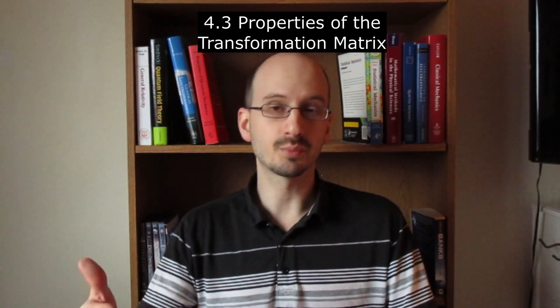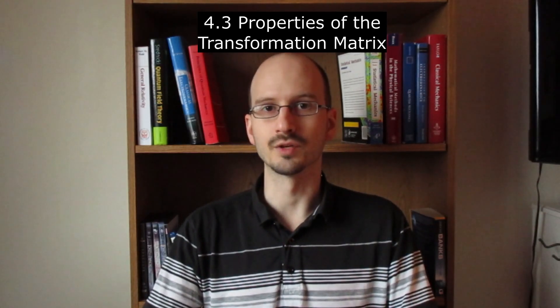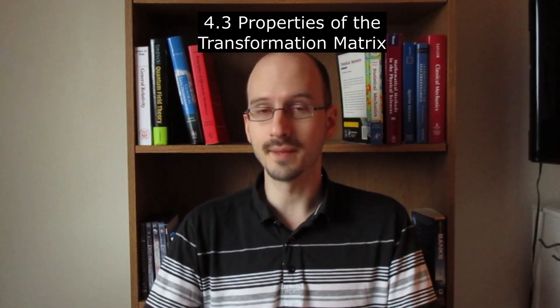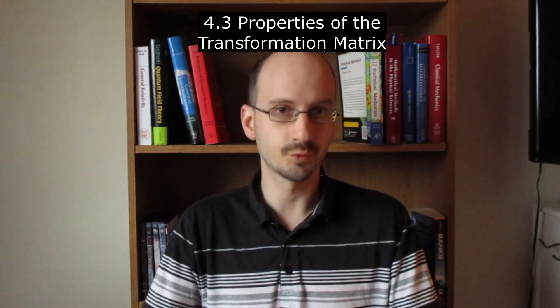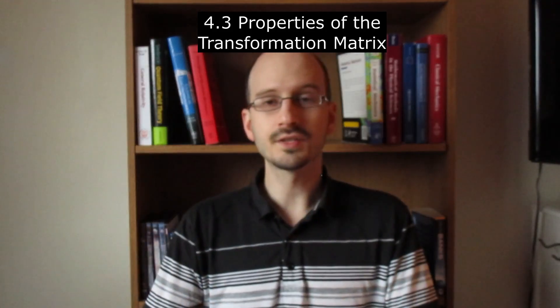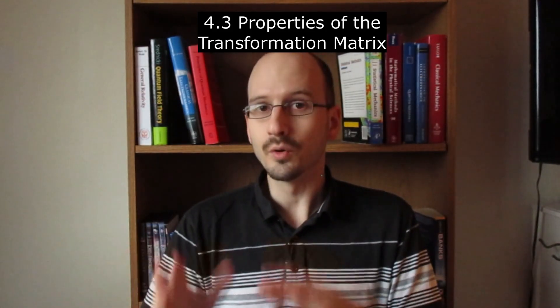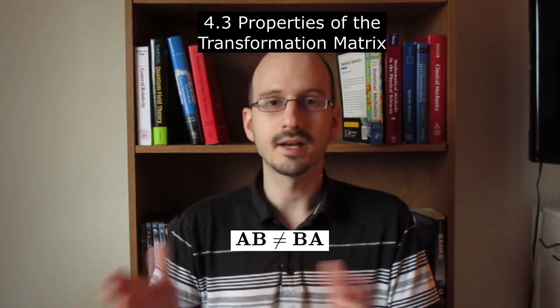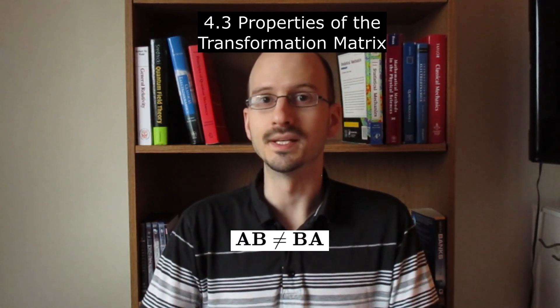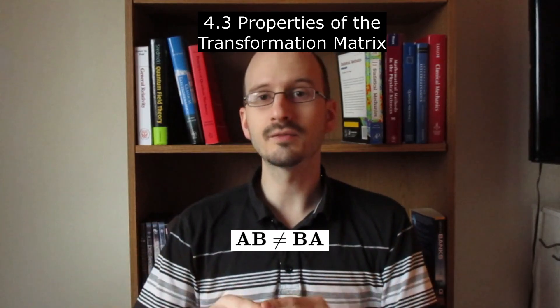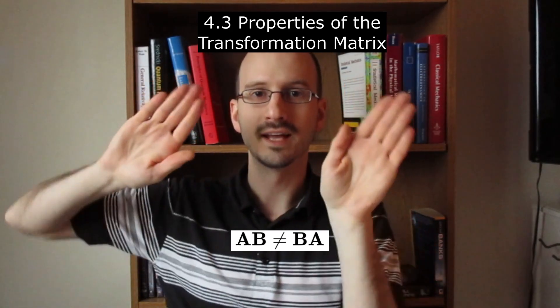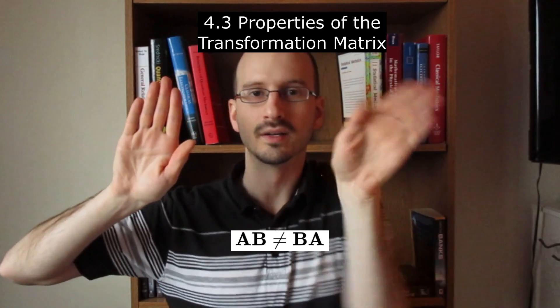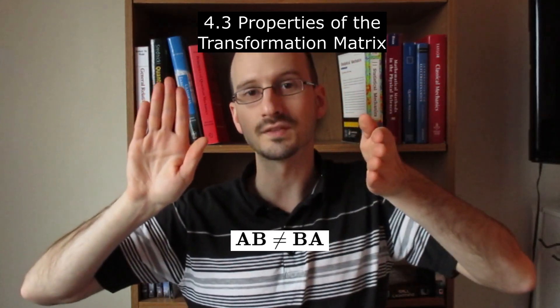Section 4.3 is properties of the transformation matrix. Now this section is pretty math heavy, but it talks about basic properties of matrices, which will be convenient to know. The first thing about matrices is that the order of operations matters. A times B does not equal B times A. We can see this if we think about rotation matrices. If our two rotations are left and down, then going left down gives us a different result than going down left.